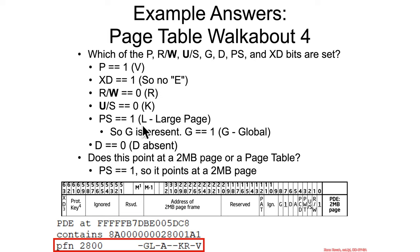PS is equal to 1 in this particular entry. So bit 7 — index A — is 1, 0, 1, 0, meaning bit 7 is equal to 1. PS equals 1 means large page.